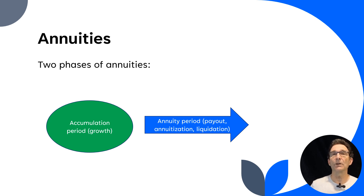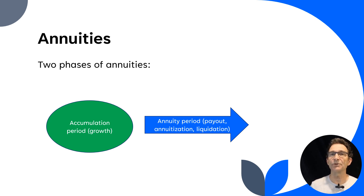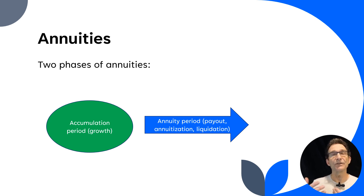There are two main phases of annuities, and you will be tested on this. Annuities have what's called an accumulation period or growth period. Then they have the annuity period, which is also known as a payout, annuitization, or liquidation. Be familiar with these terms. The accumulation period is that time of growth where the money you've put in is going to grow. The payout period is when you start to receive the benefits of that annuity. Those are the two phases of annuities.